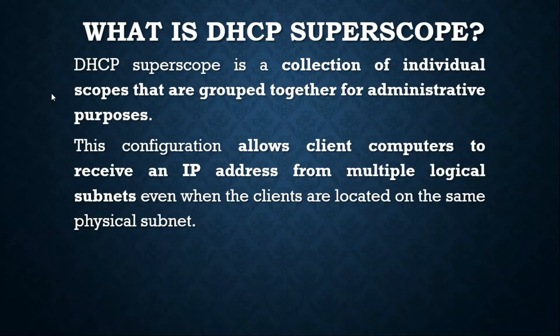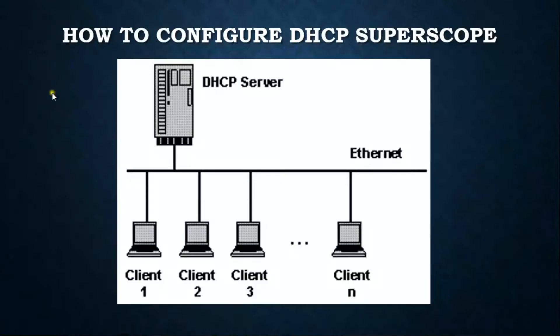What is DHCP SuperScope? DHCP SuperScope is a collection of individual scopes that are grouped together for administrative purposes. This configuration allows client computers to receive an IP address from multiple logical subnets even when the clients are located on the same physical subnet.